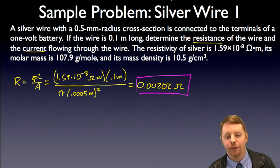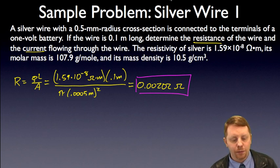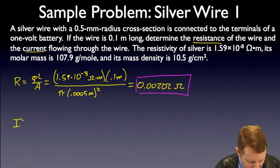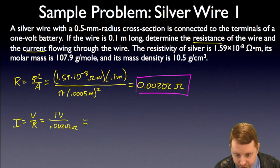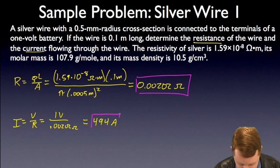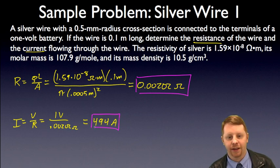Well, once we've got resistance, current should be pretty straightforward. We can use Ohm's law. I equals V over R. We have a 1 volt battery. R, we just found, 0.00202 ohms, gives me a pretty large current flow at about 494 amperes. Or 494 amps.